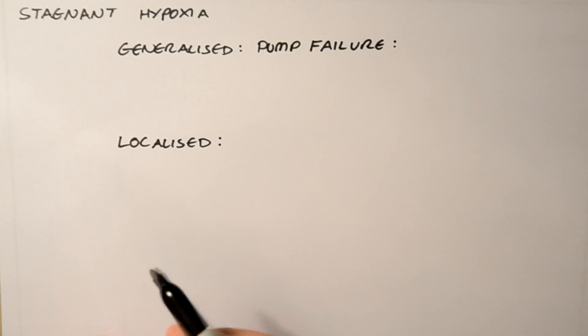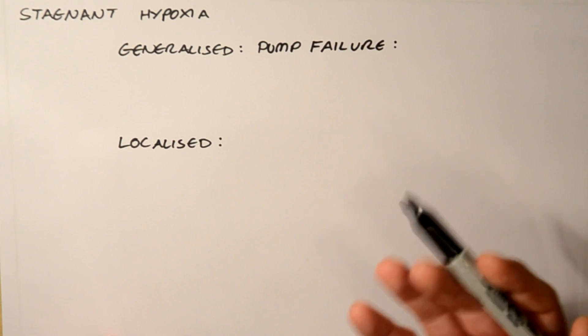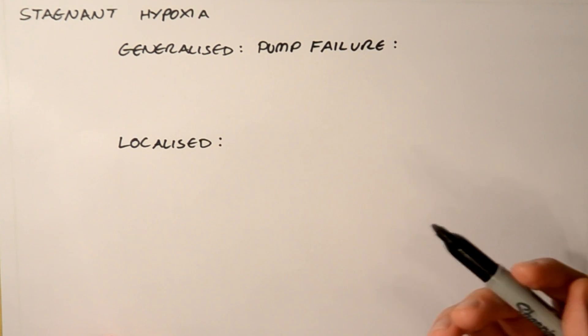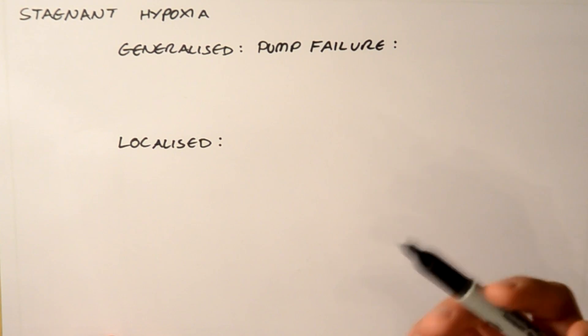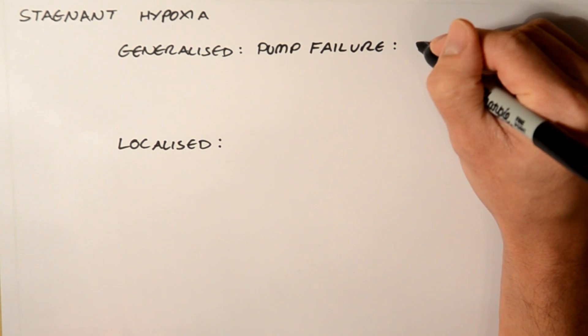This is where the red cells may actually be adequately saturated, but they can't effectively reach the tissues. If you've got someone with cardiogenic shock, for example, the heart cannot effectively pump blood around the body. This could be in a heart attack,